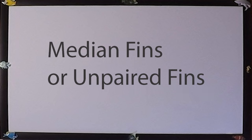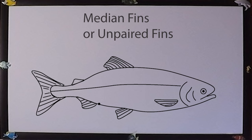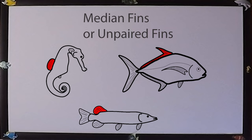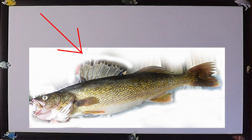The median fins, or unpaired fins, are represented by the dorsal, anal, caudal, and adipose fins. Most fishes have at least one dorsal fin; many have two, and some have more. Often within the bony fishes, the first dorsal fin is made of spines, and the second is made of soft rays.